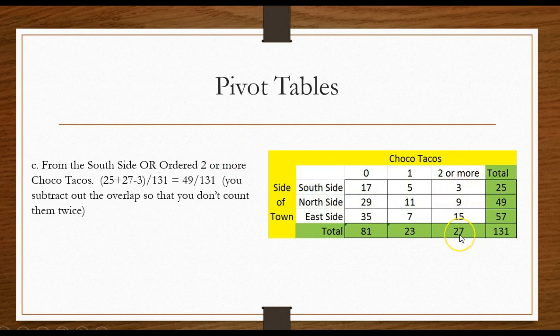So I say 25 plus 27 minus the 3. 25 plus 27 minus 3 divided by 131. Why do I subtract out the three?